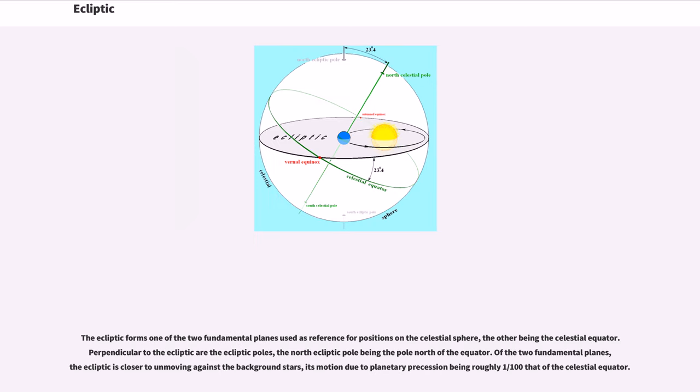The ecliptic forms one of the two fundamental planes used as reference for positions on the celestial sphere, the other being the celestial equator. Perpendicular to the ecliptic are the ecliptic poles, the north ecliptic pole being the pole north of the equator. Of the two fundamental planes, the ecliptic is closer to unmoving against the background stars, its motion due to planetary precession being roughly one one-hundredth that of the celestial equator.